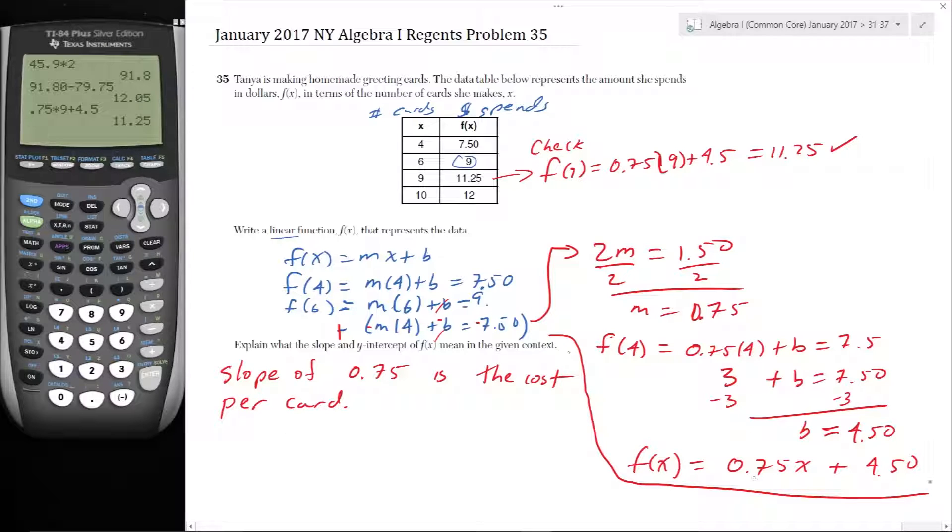So the slope of 0.75 is the cost per card. Okay? And then what is the Y-intercept? The Y-intercept is this $4.50.